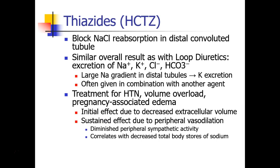A closely related group of diuretics are called the thiazides. The most common is hydrochlorothiazide, also called HCTZ. This drug also blocks reabsorption of sodium and chloride in a slightly different part of the kidney — the distal convoluted tubule. The result is very similar to loop diuretics: losses of sodium, potassium, and chloride, as well as some bicarbonate. Because of the large sodium gradient in the distal tubules, there is excretion of potassium as well.